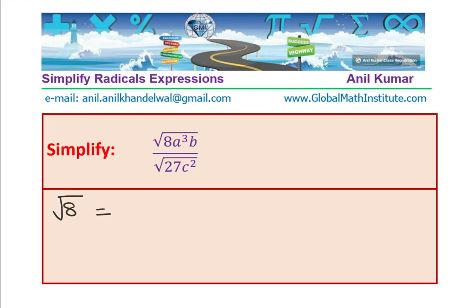We need to break this part into product of something which is a perfect square. Here, which is 4 in this case, times 2. 4 times 2 is 8 and square root of 4, as you know, is 2.